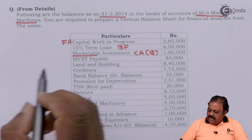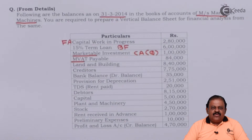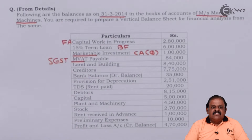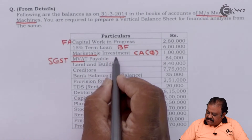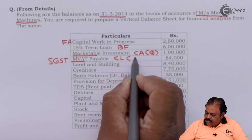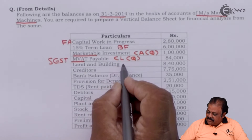MVAT payable is a tax payable to the government under Maharashtra Value Added Tax. Now it has been converted into GST, that is SGST (State GST). It is a liability — a current liability and a quick current liability. Land and building is a fixed asset.